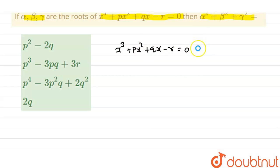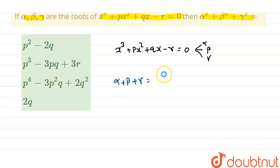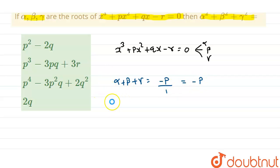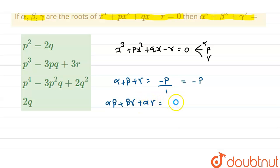As given in the question, this equation has three roots alpha, beta and gamma. Now we will write the sum of the roots: alpha + beta + gamma = minus of coefficient of x² divided by coefficient of x³, which equals minus p. Now we will write the sum of the products of the roots: alpha·beta + beta·gamma + alpha·gamma = coefficient of x divided by coefficient of x³, which equals q.